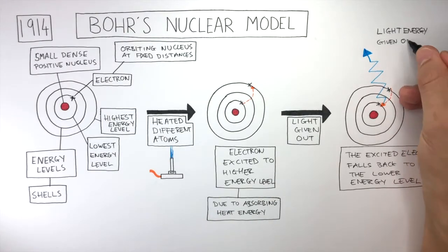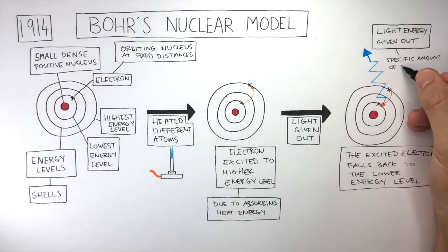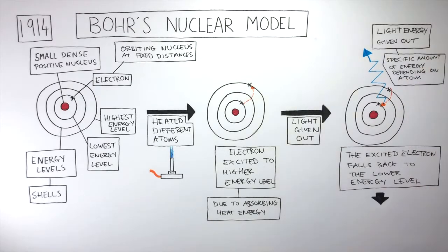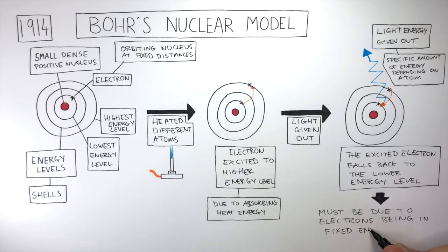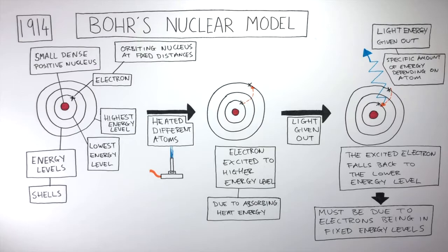The excited electron falls back to the lower energy level, releasing light energy as shown by this blue line. The light energy given out is a specific amount of energy depending on the atom. Bohr realized this must be due to electrons being in fixed energy levels, as the specific amounts of energy released by different atoms were due to the electrons being in specific fixed energy levels depending on the size of the atom and how many electrons are present.